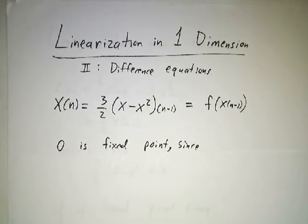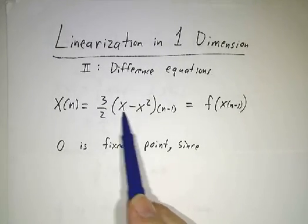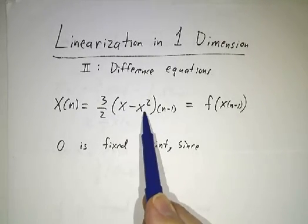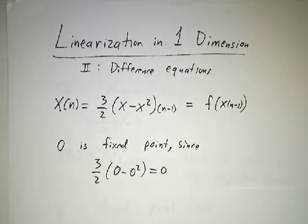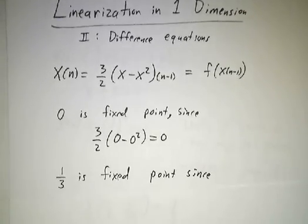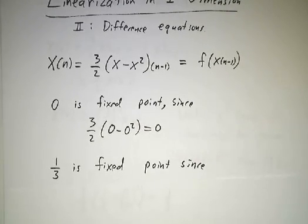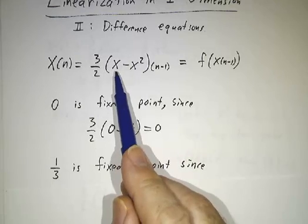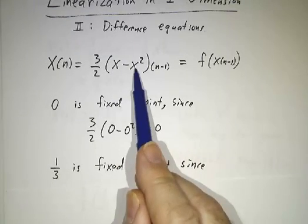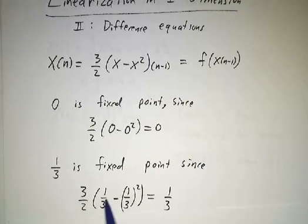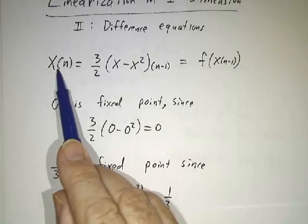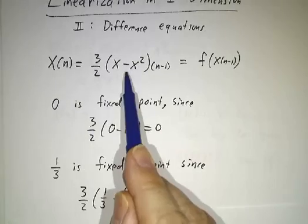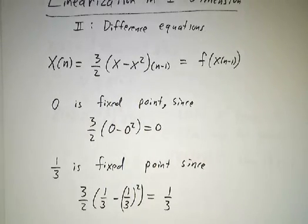0 is a fixed point because if yesterday x was 0, then 3 halves of 0 minus 0 squared is 0, and today x is 0. But 1 third is also a fixed point because if yesterday x was 1 third, 1 third minus 1 third squared is 2 ninths. Multiply by 3 halves gives you 3 ninths, which is 1 third. So if yesterday x was 1 third, then today x is 1 third, and tomorrow x will be 1 third. So there are actually two fixed points.